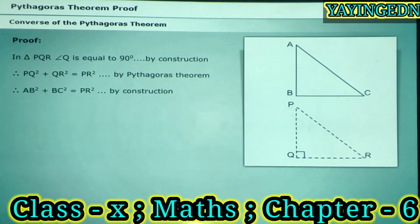Therefore, by construction, AB squared plus BC squared is equal to PR squared. But we know that AB squared plus BC squared is equal to AC squared. So, PR squared is equal to AC squared. Therefore, PR is equal to AC.